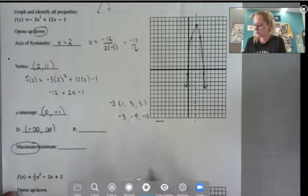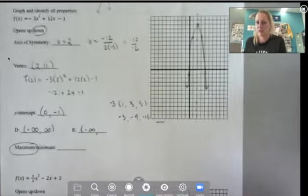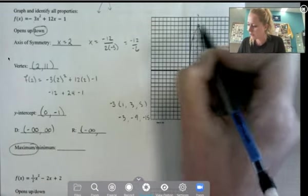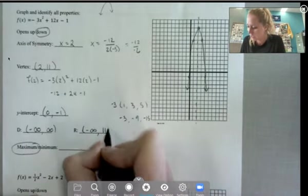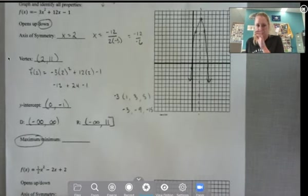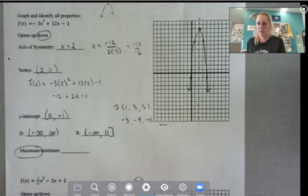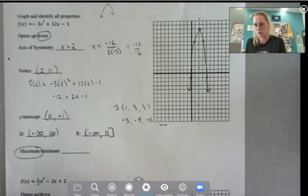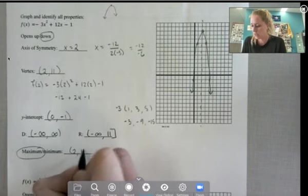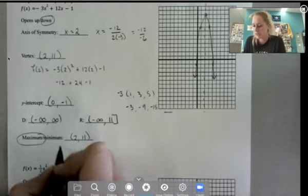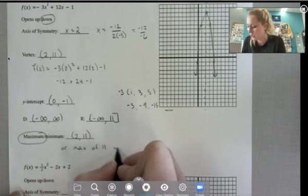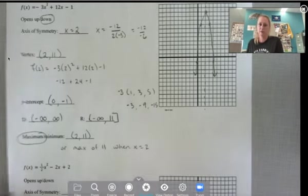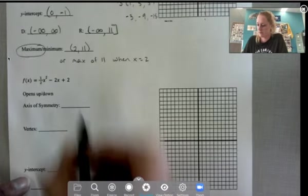We also knew the y-intercept was at 0, negative 1. So that should be a reflection of the other points. So you can also use the y-intercept to get another point. So now we can answer the range questions. So because it's opening down, it has a low value of negative infinity, and the highest it gets to is that y value of 11, where the vertex is. And use brackets because we have a point sitting on 11. So our maximum or minimum value, I like to put the ordered pair here, but typically it's asking what is the maximum value. That's a y value, but I'm just going to put the ordered pair, which is going to always be the same as our vertex. Or you can answer it like this, max of 11 when x equals 2.